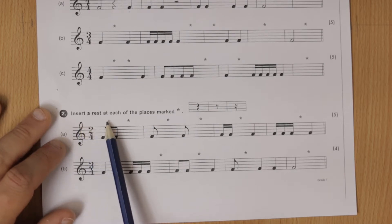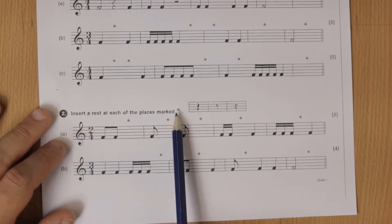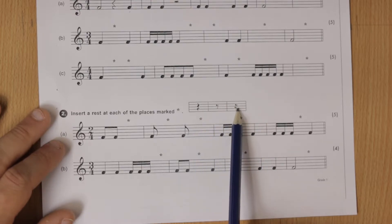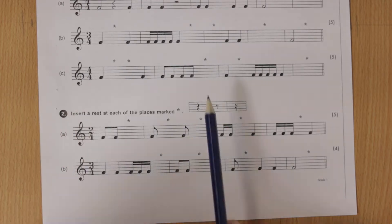This one—insert a rest at each of the places marked, same one again only it's different rests this time: crotchet, a quaver, or a semi-quaver rest. Same deal though.